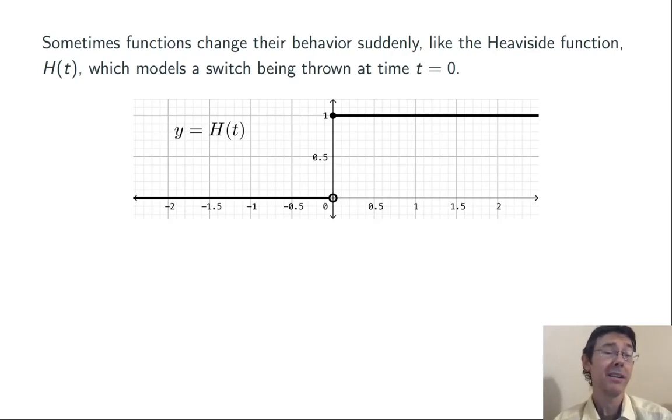This graph is modeling a switch that's thrown at time t equals zero. Before t equals zero, the switch is off, the function is equal to zero. At t equals zero, things change suddenly. The switch is on, and now the function is equal to one.